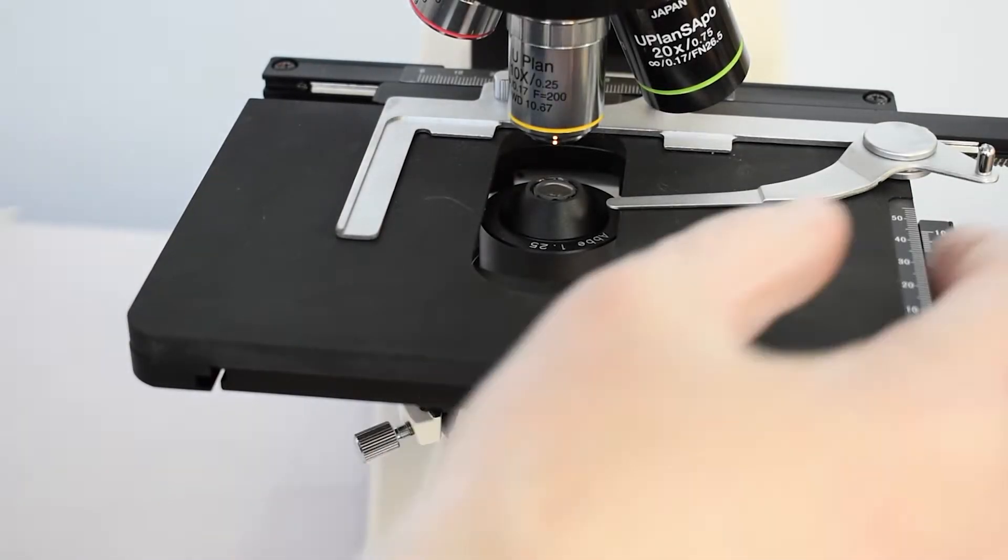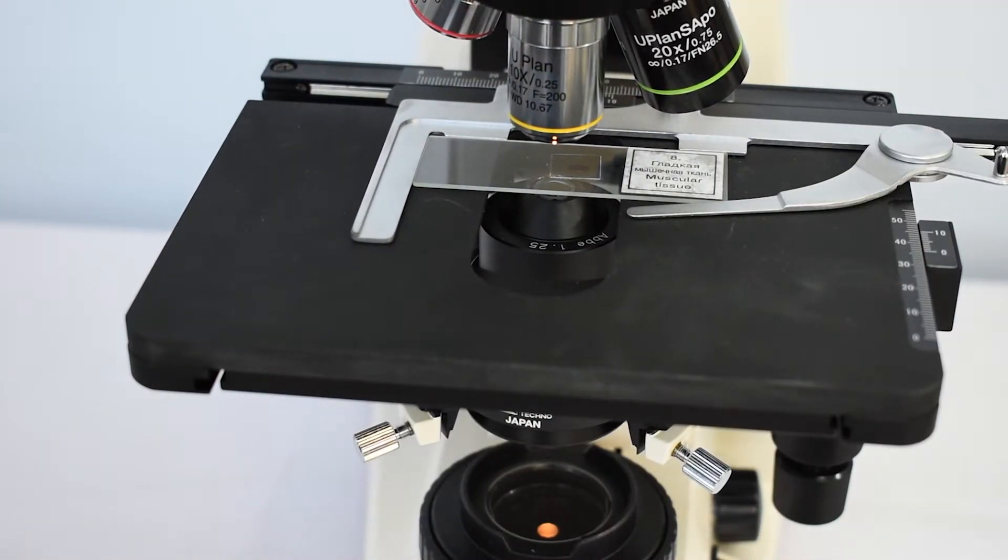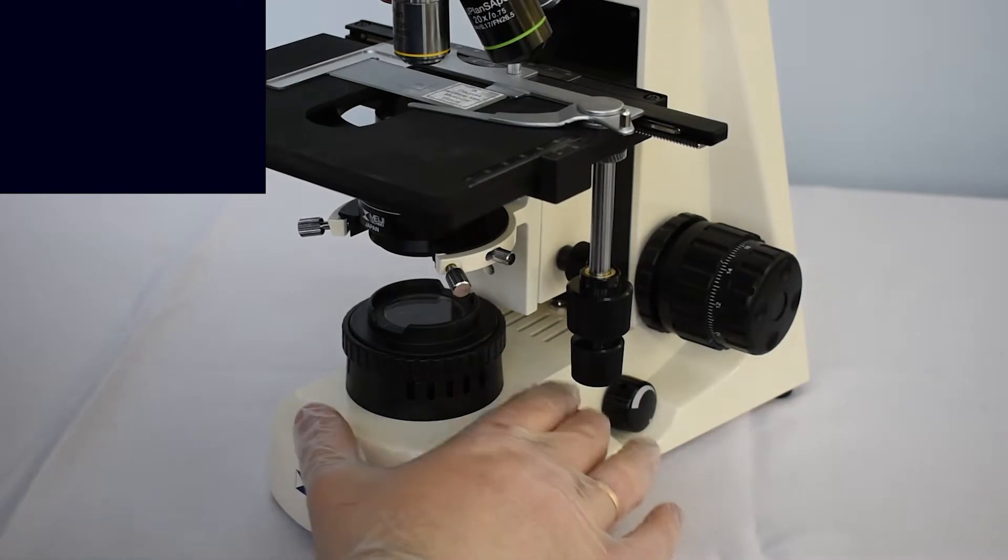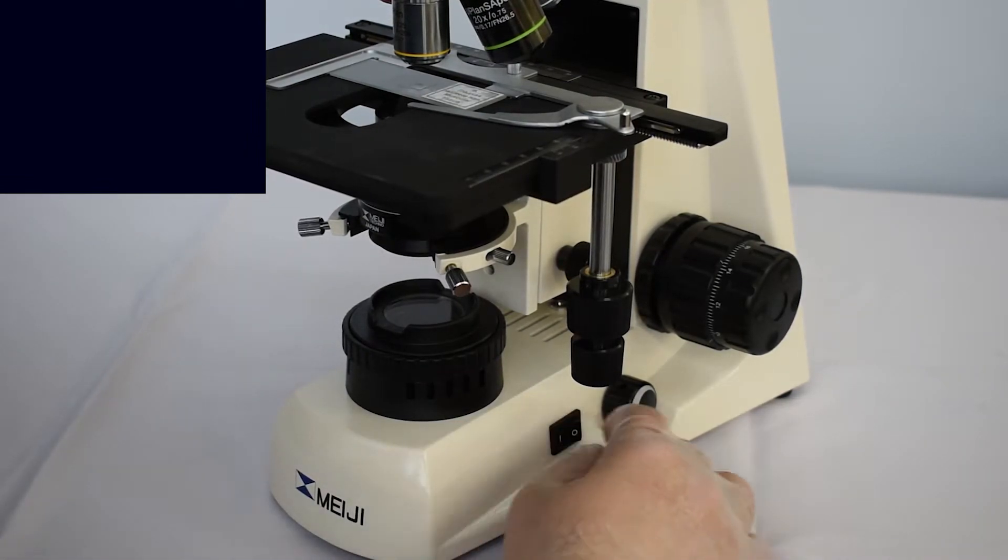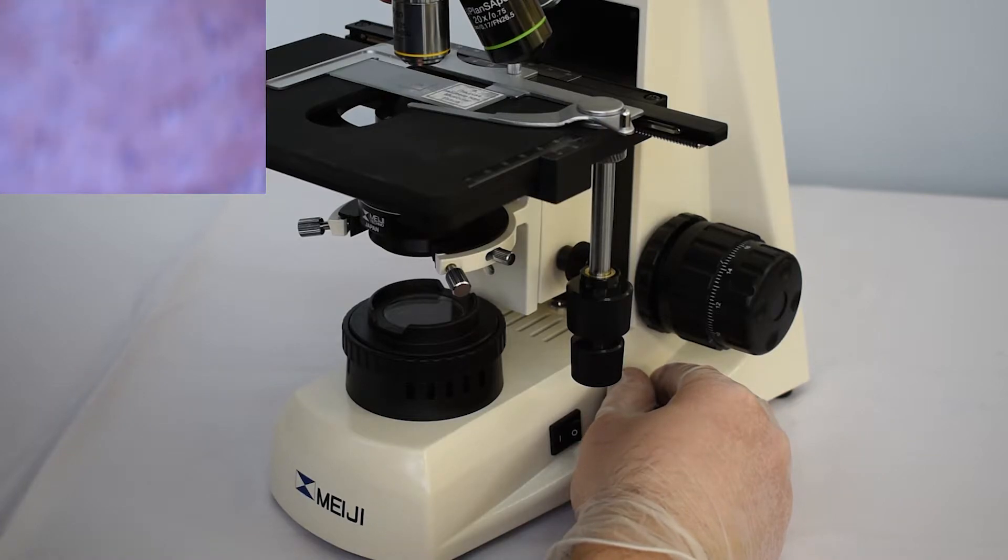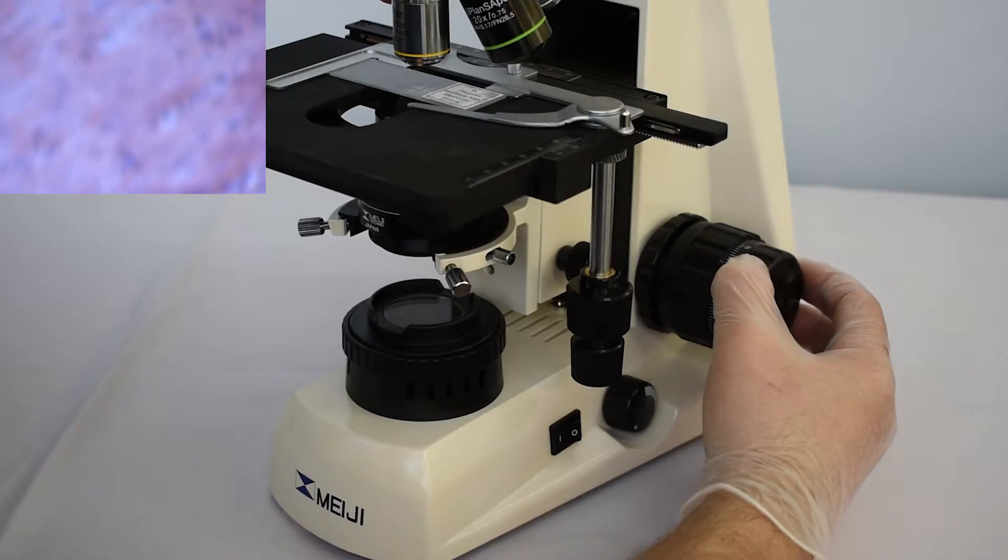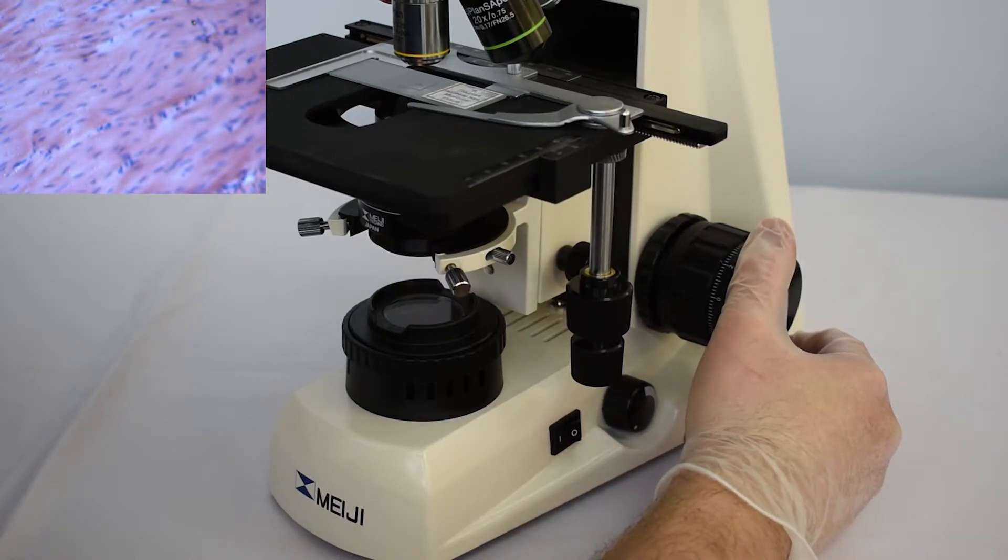Before starting work you should fix the slide on the stage using the slide holder. Then you need to turn on the microscope lighting, adjust the light intensity that is comfortable for your eyes, select 10x objective and focus on the sample using a micro screw.